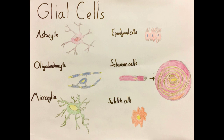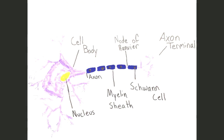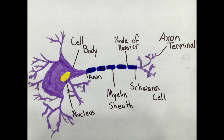Glial cells are the supporting cells of the nervous system. There are astrocytes, which form a protective blood-brain barrier; oligodendrocytes, which myelinate the central nervous system; microglia, which phagocytize dead nervous tissue; ependymal cells, which produce cerebrospinal fluid; Schwann cells, which myelinate the peripheral nervous system; and satellite cells, which protect and surround other neurons.